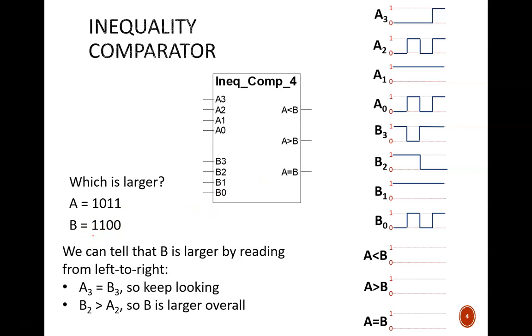We can tell that B is larger by reading left to right. The most significant bits are equal, so keep looking. In the next bit, B is larger, so that makes B larger overall. We don't need to keep looking. So the B is greater than A output signal would be activated, and the other two outputs unactivated. With this in mind, try to complete the timing diagram. Pause the video while you do.